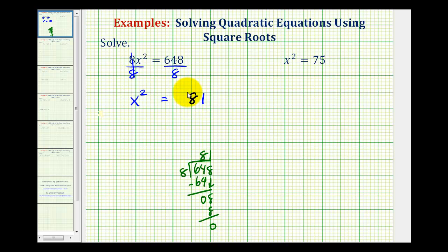So now we have x² equals 81. Now we want x, not x², so to undo this squaring, we're going to square root both sides of the equation. But remember when doing so, we are going to have plus or minus square root 81 on the right side.